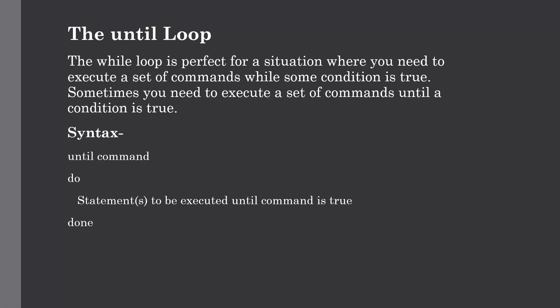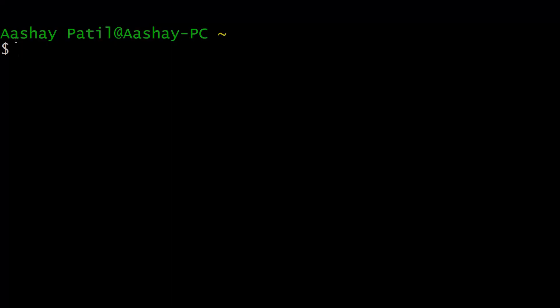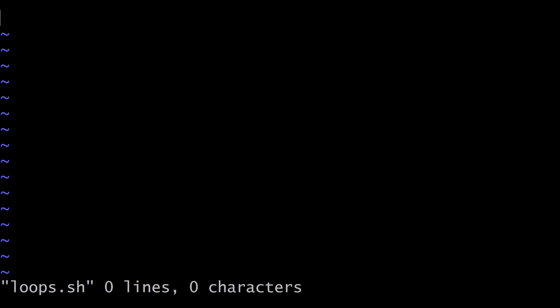Our next loop is the until loop. The while loop is perfect when you need to execute commands while a condition is true, but sometimes you need to execute commands until a condition becomes true — for that we use the until loop. The syntax is: write 'until', pass the command, then 'do', the statement to execute, and close with 'done'. It is similar to the while loop, but the statement executes while the condition is false.